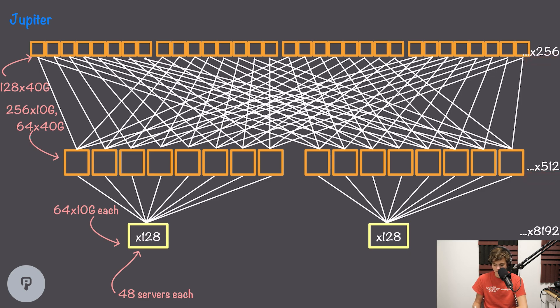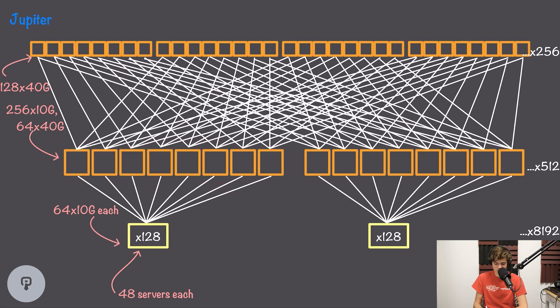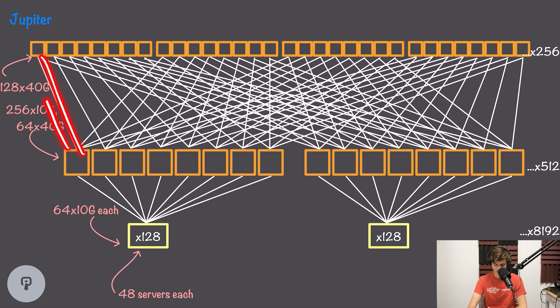Over the years, Google evolved this architecture to support higher-speed, higher-density switches. Today, Google's data center network is codenamed Jupiter. It has 256 spine switches, 512 aggregation switches, and supports 8,192 racks. Servers now have 10-gigabit connections to top-of-rack switches, with up to 48 servers per rack. The other 16 10-gigabit ports connect to eight separate aggregation switches using dual-redundant 10-gigabit links. Each aggregation switch supports 64 40-gigabit uplinks, connecting to 32 of the 256 spine switches using redundant 40-gigabit connections.